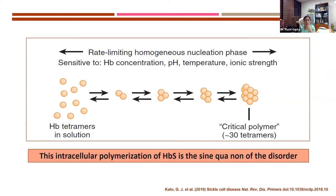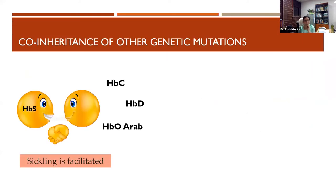Factors contributing to sickling beyond the hemoglobin concentration include pH, temperature, ionic strength, concurrent infections, and dehydration. These can lead to precipitation of hemoglobin S and its subsequent manifestations.